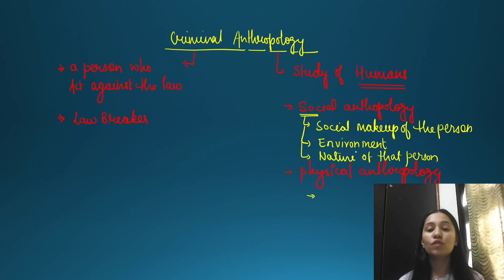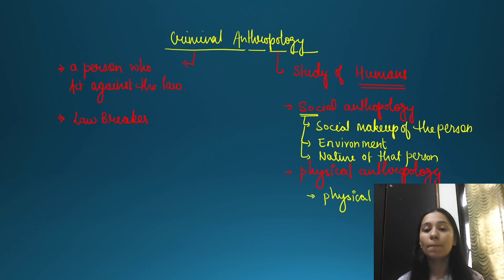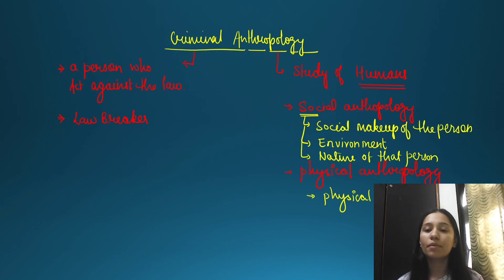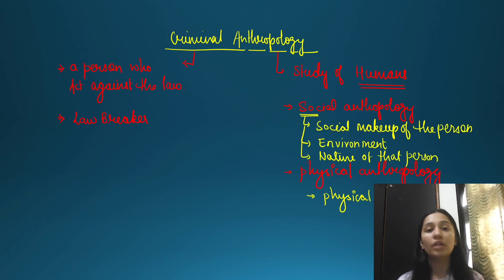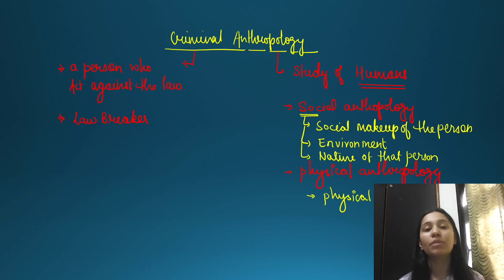Physical anthropology deals with the physical makeup and composition of the person. Sometimes if something is wrong with the physical state or appearance, a person may develop criminal intent. For example, if a person looks unusual and is bullied at school, that experience can lead them to develop criminal intent — because the physical appearance ultimately impacts that person socially.